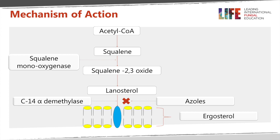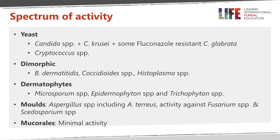This is a diagram of the conversion through squalene, squalene 2,3-oxide, and lanosterol. The enzyme at 14 alpha demethylase eventually produces ergosterol at the bottom, which sits in the cell membrane.